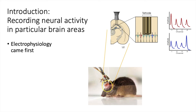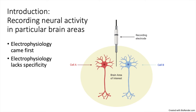This technique helped a lot in understanding the function of different brain areas, but as our understanding of neuroscience grew, it became apparent that broad electrical activity isn't enough to understand the complex circuits within a brain area. For example, in this hypothetical circuit, activation of cell A would cause behavioral output A and activation of cell B would cause behavioral output B.